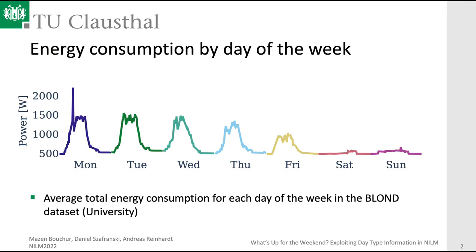If we take a look at the average energy consumption per each day of the week for the BLOND dataset, which has been captured in a university building, we can see a different color for each day of the week where each day has been averaged over all occurrences. For instance, Monday represents all Mondays in the dataset. Clearly we can see a pattern: as the week proceeds, especially on Friday, total energy consumption drops down, and on weekends the energy consumption is pretty low.